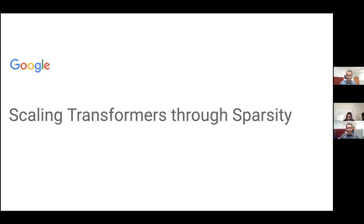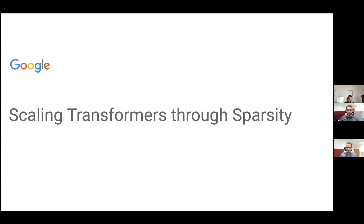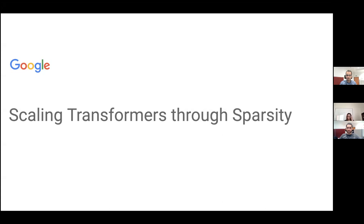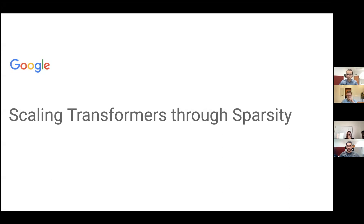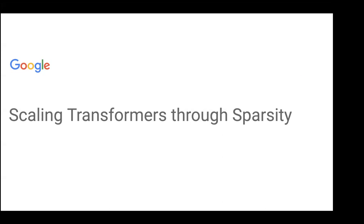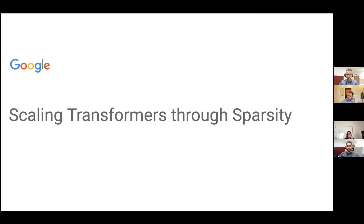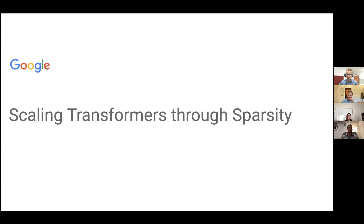Today I'm going to be talking about how to scale transformers through sparsity. The kind of sparsity I'm talking about today is when each input can get a different set of weights and or have different computation applied to it. So if you have two tokens coming in, potentially each token could get a different subset of weights, or one might have more computation applied than the other. We're going to be using this in the context of scaling up neural models.